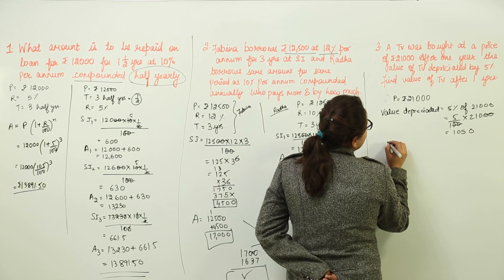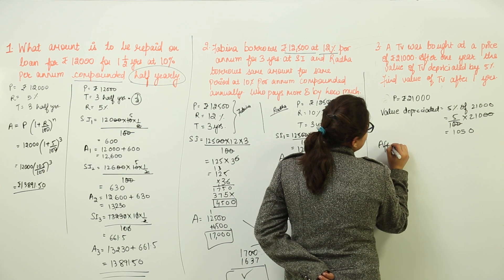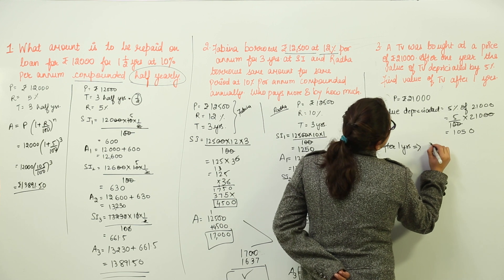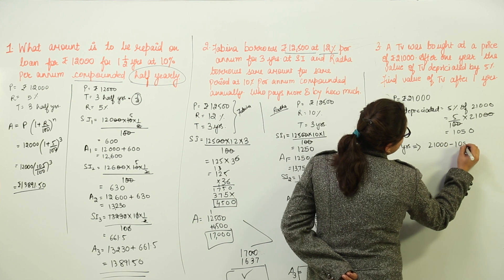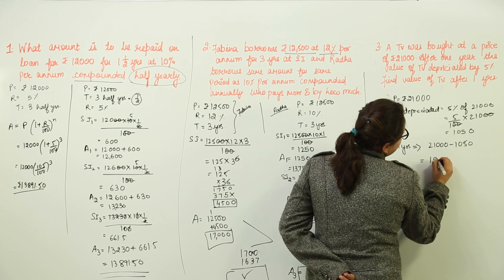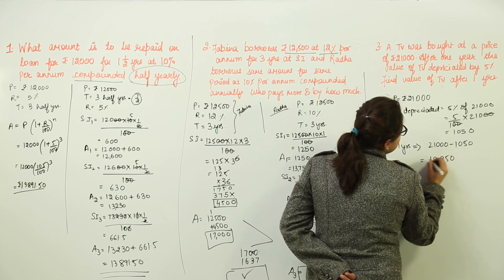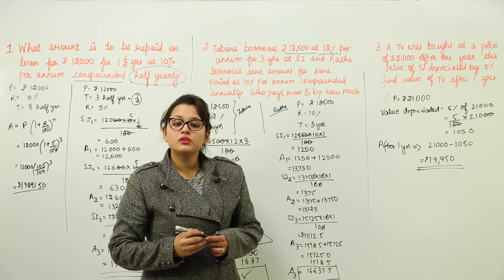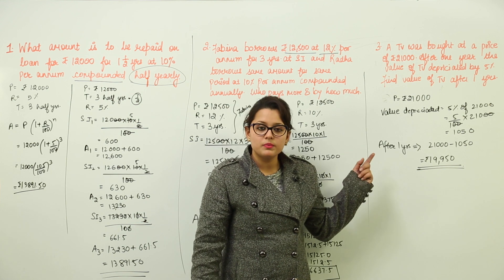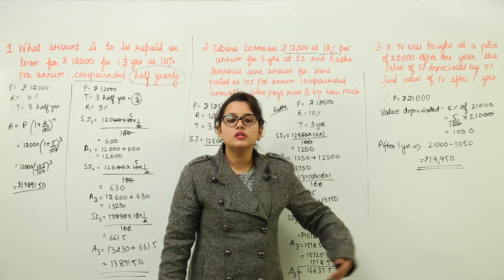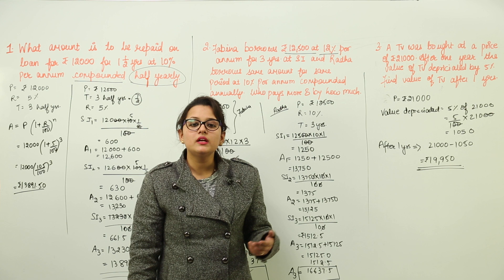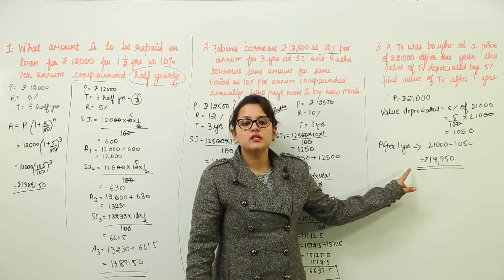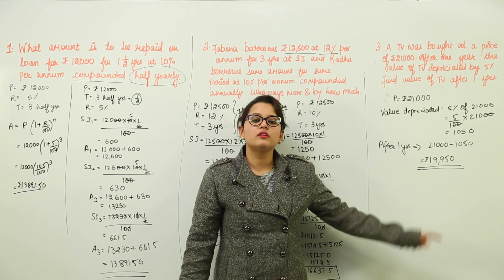The value depreciated = 5% of 21,000 = (5/100) × 21,000 = Rs. 1,050. After 1 year, the value of the TV = 21,000 − 1,050 = Rs. 19,950. So if the person wants to resell the TV after 1 year, its value has reduced by 5% and it can be sold for Rs. 19,950.